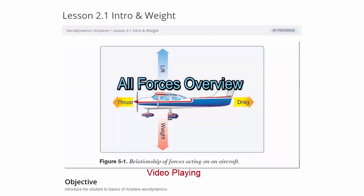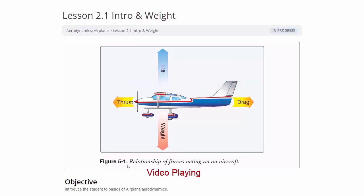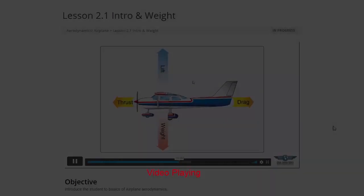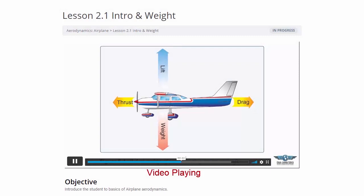Here we have our basic aircraft forces — figure 5-1 from the Pilot's Handbook of Aeronautical Knowledge. We'll use 1,000 pounds of weight to keep it simple. To keep this aircraft in level flight with 1,000 pounds of weight, we need 1,000 pounds of lift. With a lift-to-drag ratio of 10 to 1, the lift and weight forces are 1,000 and the drag and thrust forces are one-tenth of that.